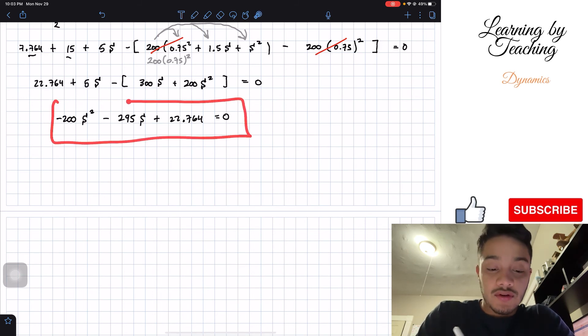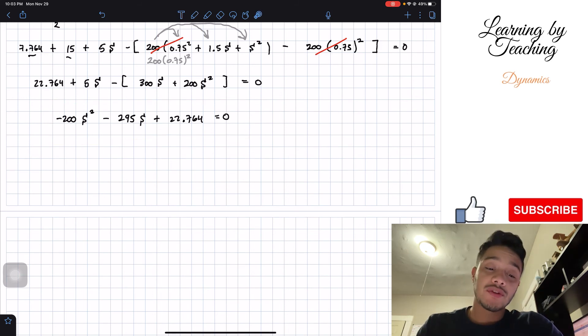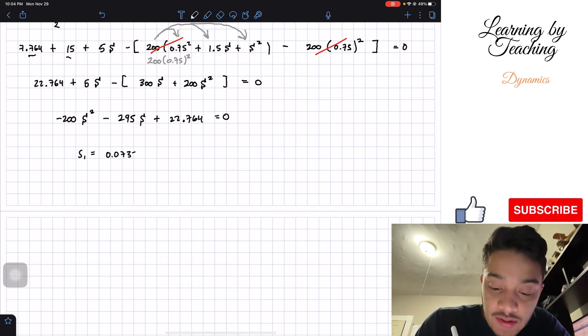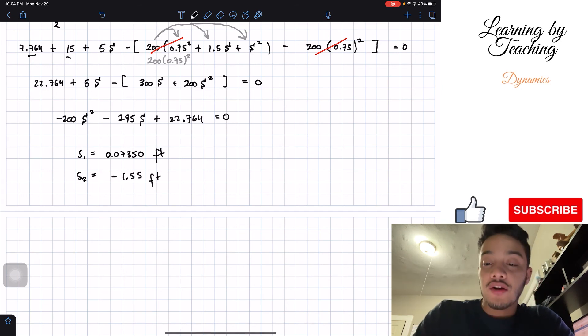We can use multiple ways of solving this, so I'm going to utilize my calculator. As soon as I do that, it's going to give me two answers. The first answer is going to be 0.07350 feet, and the second answer is going to be negative 1.55 feet.